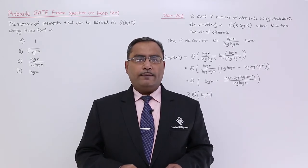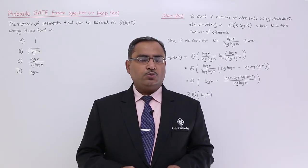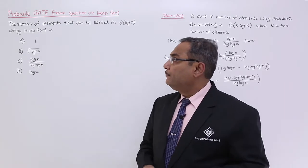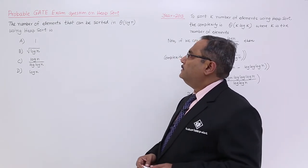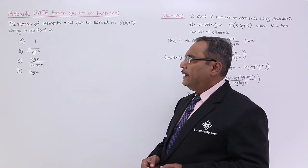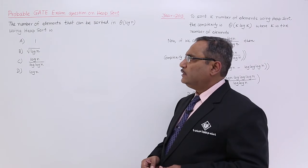Let us solve another GATE problem which came in the year 2013 on heap sort. See the problem. The number of elements that can be sorted in big theta of log n using heap sort is,